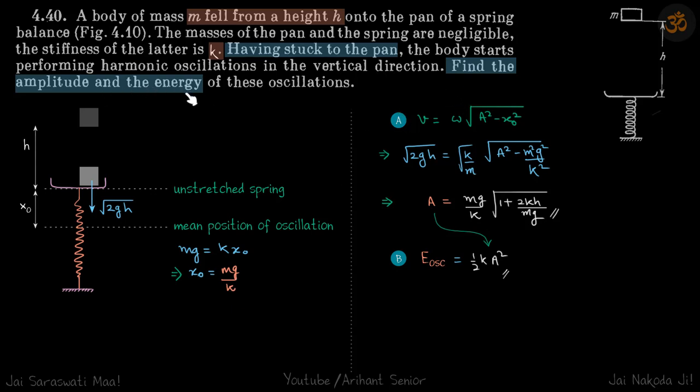Now we need to find the amplitude and energy. For amplitude, we will use this formula for SHM: v equals omega root a squared minus x0 squared. Why are we using this formula? Because when it goes with this velocity root 2gh, this is not the mean position. As it goes down, its velocity will further increase until it reaches its mean position. So this is just a point somewhere in between, and in those cases we use this equation which is for any general point in a SHM.